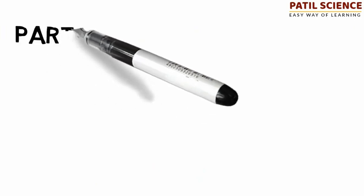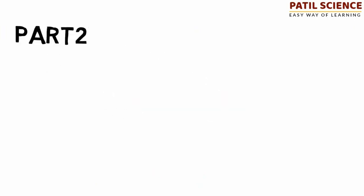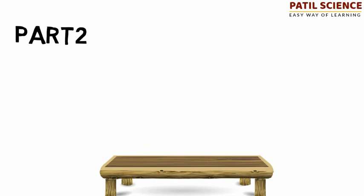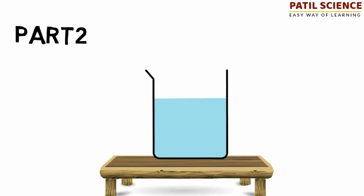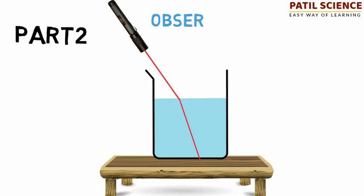In part two of the activity, take a table, now place the container containing some water on the table, fix the torch above the container and switch it on, and observe the path of the light.